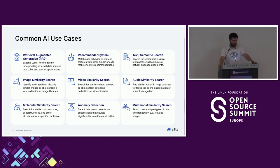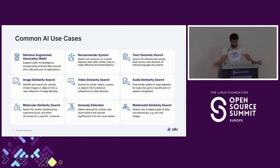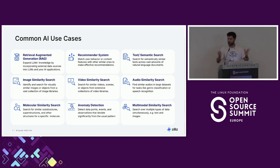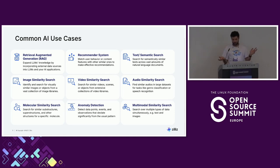Here are nine use cases where we have customers. The first one is RAG — Retrieval Augmented Generation — the one you've been hearing about for the past year. We also have recommender systems, semantic search, image search, video search, audio search, and molecular search. Some companies are creating proteins using AI and doing molecular search. You can also do anomaly detection, and last but not least, multimodal similarity search — searching for images, audio, and text at the same time.